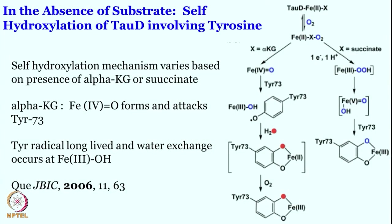Now we will try to see another aspect mentioned earlier — what happens in the absence of organic substrate. For example, in TauD when taurine is absent, what happens to tyrosine? As seen in the crystal structure, tyrosine is right close to the active site. Is tyrosine going to participate in the reaction in the absence of the natural substrate taurine?